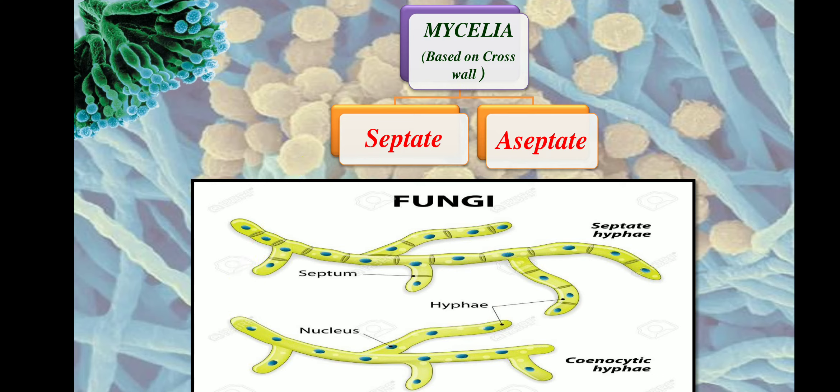The formation of a septum is always preceded by the division of the nucleus. As the nucleus keeps dividing, the cross wall keeps forming. So septum formation is always preceded by nuclear division.